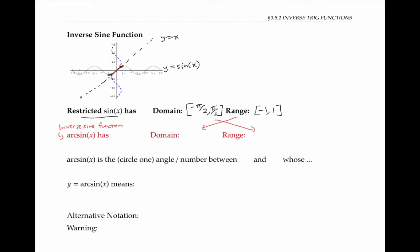So arc sine of x, the inverse function, has domain from negative one to one, and range from negative pi over two to pi over two, which seems plausible from the graph.